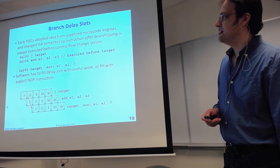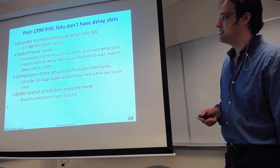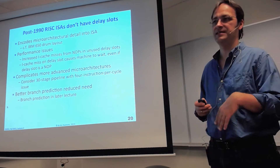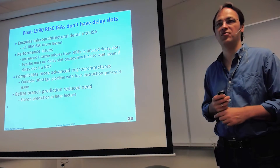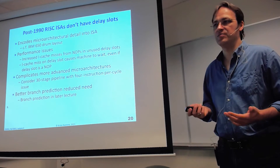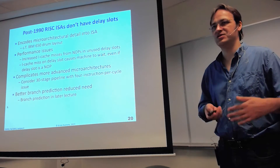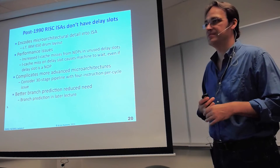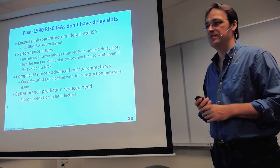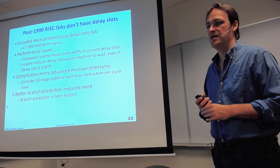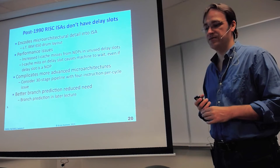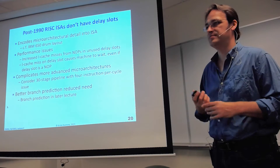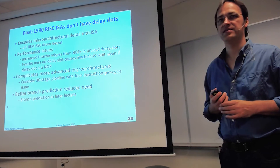The problem with delay slots is they mix up the microarchitecture with the architecture. It seemed like a cool idea and everybody did it in early RISC because it gave a reasonable performance win and was very simple — basically just avoided adding the kill logic. So they made it part of the ISA. The very early RISC machines relied only on this; with a five-stage pipeline there was basically no branch penalty once you had the branch delay slot filled. Roughly 70% of the time there was something useful in the delay slot.